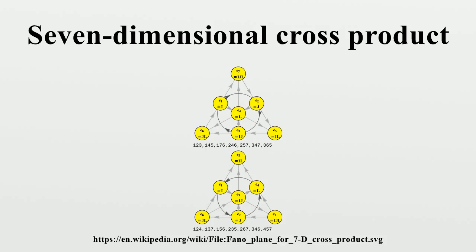In contrast to the three-dimensional cross-product, which is unique, there are many possible binary cross-products in seven dimensions. One way to see this is that given any pair of vectors x and y in R7 and any vector v of magnitude equal to |x||y|sin(θ) in the five-dimensional space perpendicular to the plane spanned by x and y, it is possible to find a cross-product with a multiplication table such that x times y equals v. Further properties follow from the definition, including anticommutativity, the scalar triple product, and the Malcev identity.